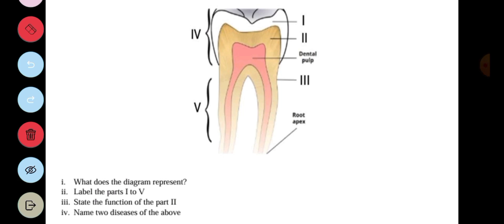So we have the structure of the tooth here as well and we are asked what does the diagram represent. The diagram represents the structure of the mammalian tooth. This is labeled I to V, so I is the enamel, II is the dentine, then III is the cement. Then the IV is the crown and V is the root. The next one is state the function of the part II. II which is the dentine provides structural support for the tooth. Then the next question says name two diseases of the above, so disease of the tooth include tooth decay, gingivitis, periodontal disease and an abscess, even mouth odor is also a disease of the tooth.